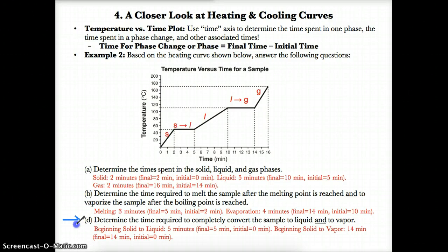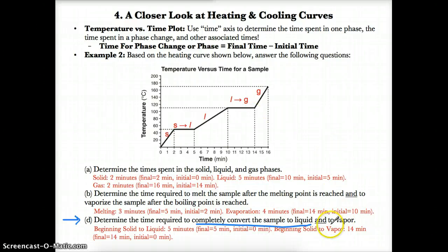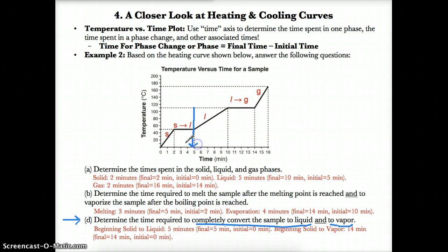To find the total amount of time required to completely convert a sample to liquid from its starting solid phase, you would just do the time up to the end of melting minus the time where you began heating. And to calculate the time required to completely convert it to vapor, you find the end of vaporization and subtract the time that you started heating. In this case, the time required to completely get to melting would be five minutes and the time started is zero, so you do five minus zero, giving five minutes.